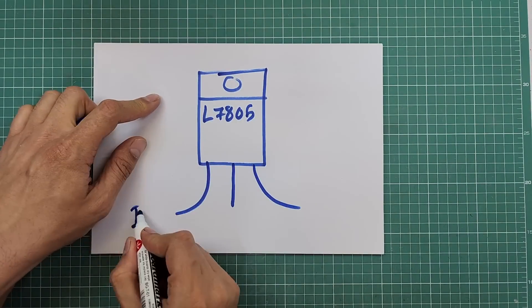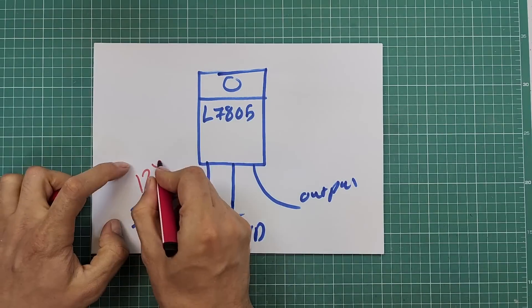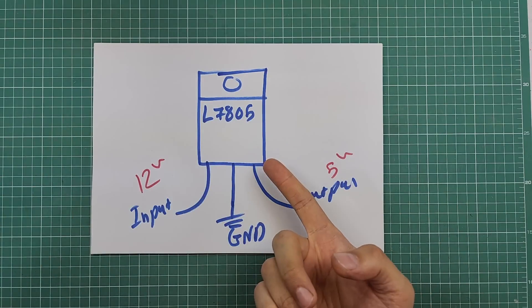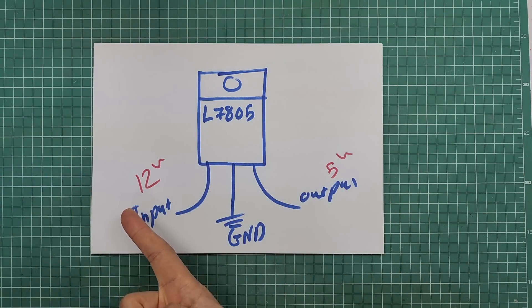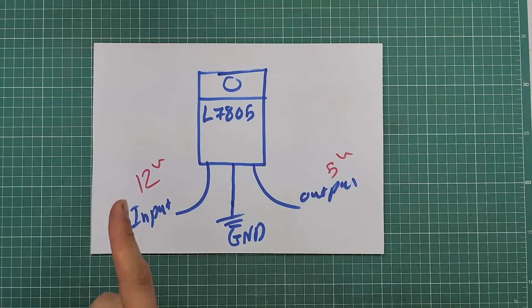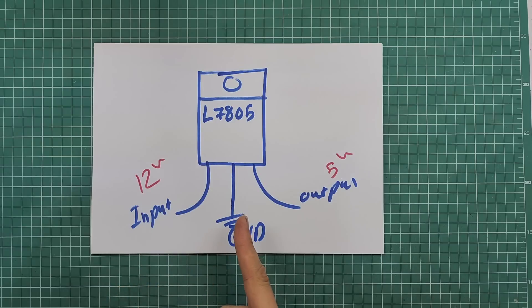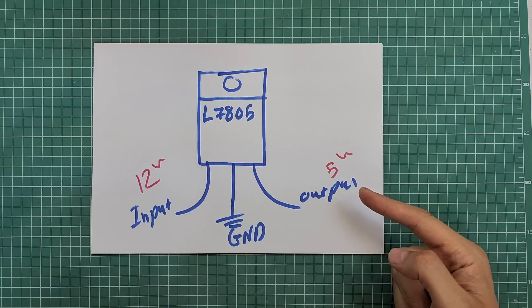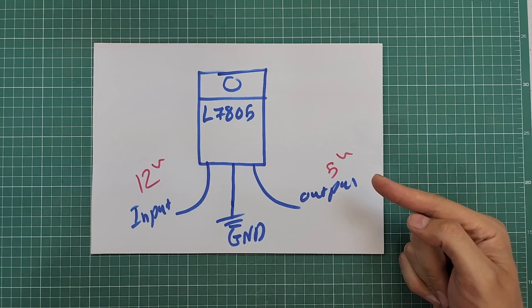This is an L7805 voltage regulator. It can take 12 volts at input and drops it down to 5 volts at output. This is your 12 volt input pin, this is your common ground, and this is your 5 volts. You can use these 5 volts to power up the MCU.